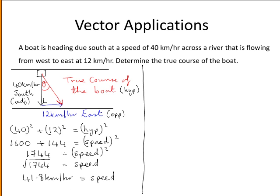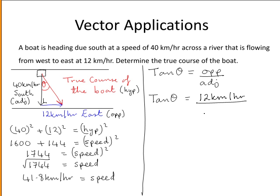Since we also want to find the direction of the boat we have to solve for theta. So tan of theta is equal to the opposite over the adjacent and filling in our opposite is 12 km per hour and the adjacent is 40 km per hour.